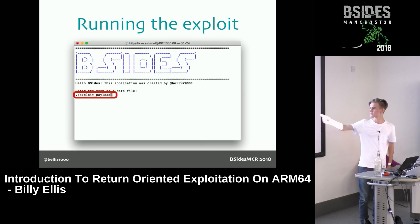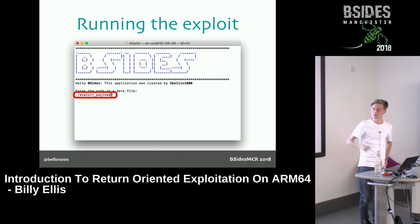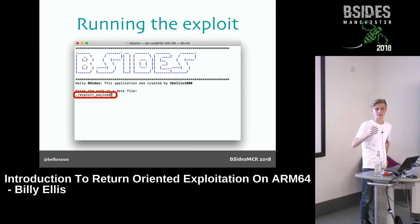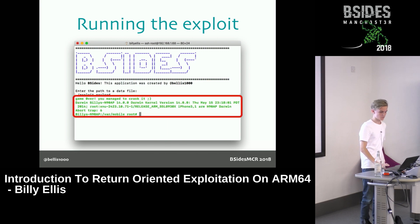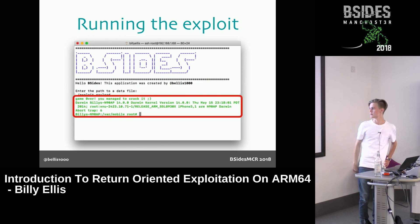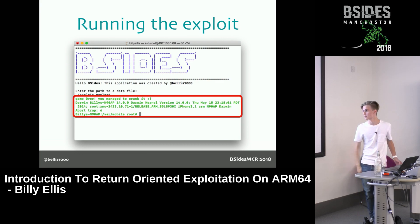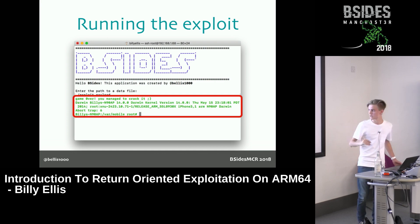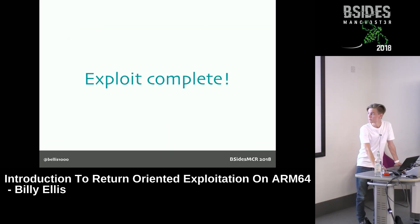We specify the exploit payload file, run the program, and enter it. Instead of just reading out the data and finishing, this time it takes full control, executes the ROP chain, and we get the success message saying we successfully cracked the binary. It also executes a 'uname -a' command. That's the exploit complete.